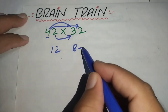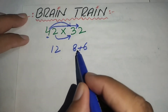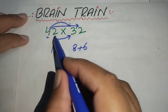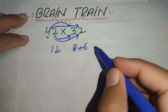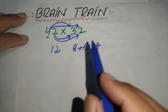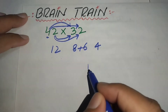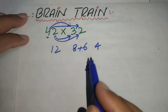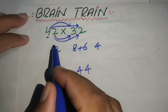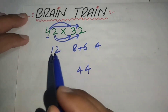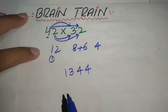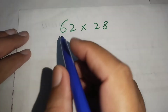We add 6 to the previous number. After that we multiply 2 by 2 and get 4. We write 4 as it is, and 8 plus 6 is 14 — we write 4 here and carry 1. Then 12 plus 1 is 13, which is our answer.